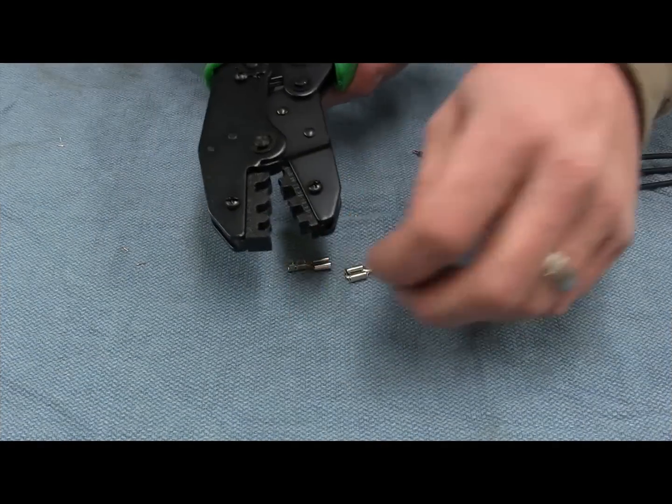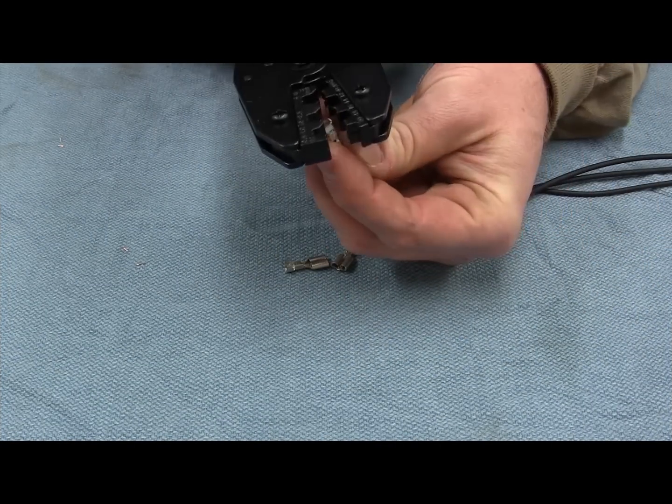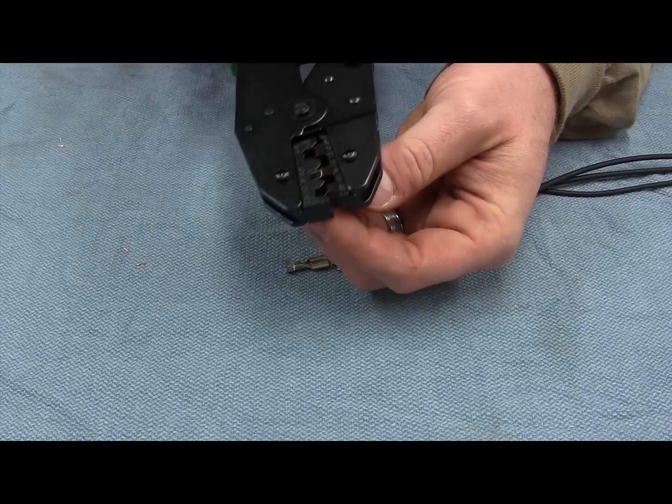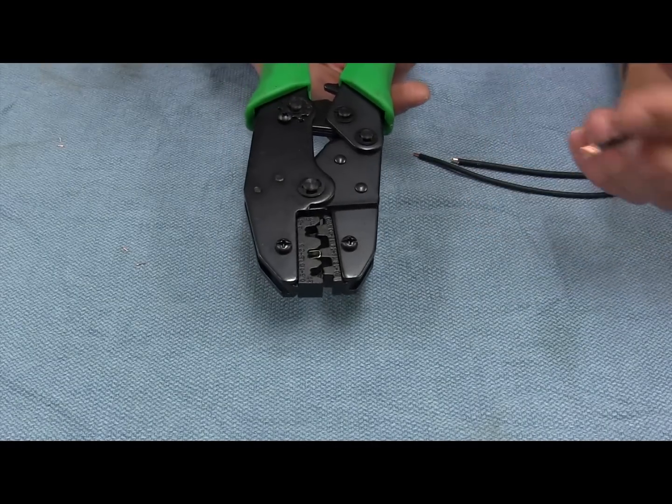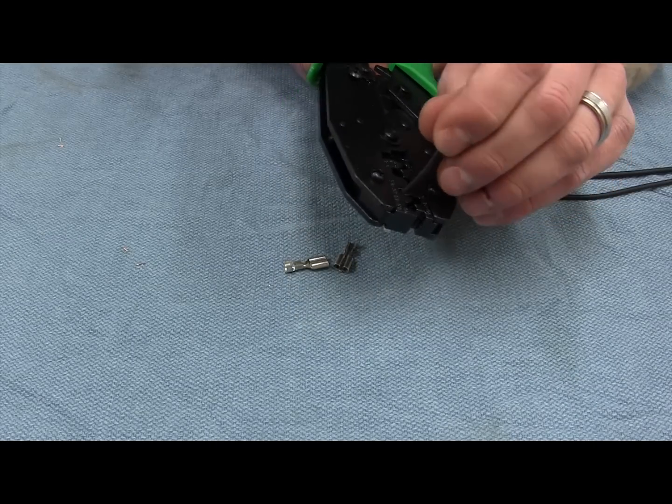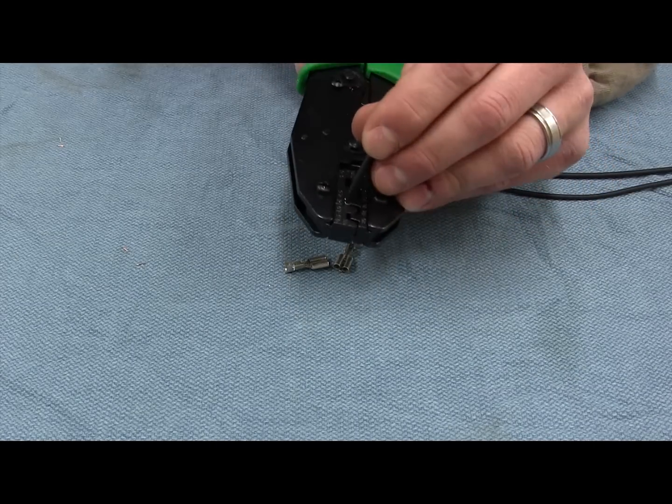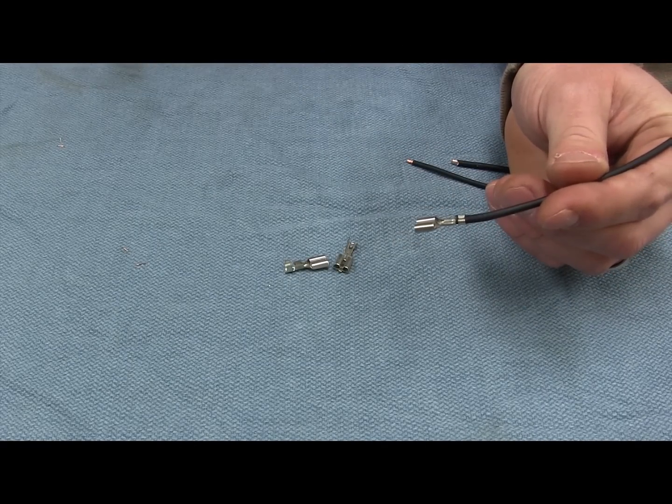I found the easiest way to do this is to take your crimpers, install your terminal, clamp it down just enough to hold it there but don't crush the tabs in yet. That leaves you free to take your wire, insert it into the terminal, and crimp down on it. You can go ahead and repeat this for all your remaining leads.